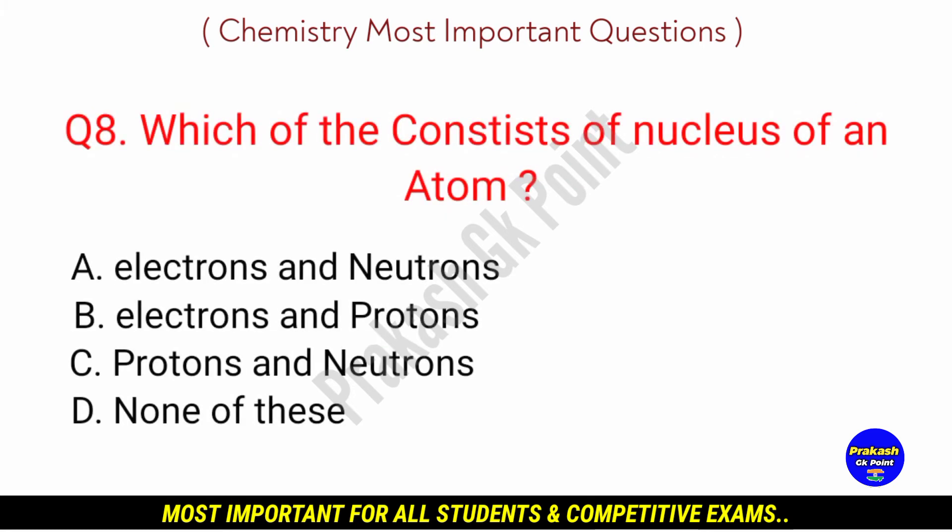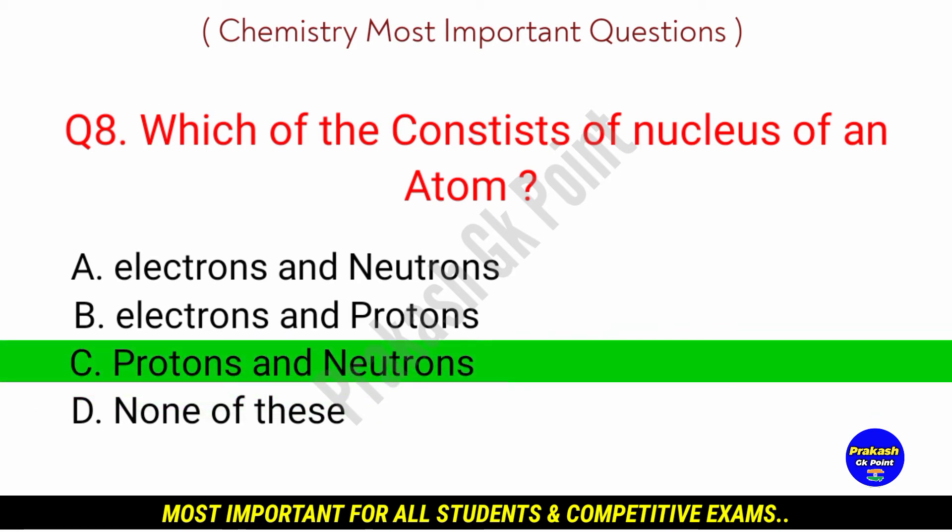Which of the following consists of the nucleus of an atom? Answer: option C, Proton and Neutron.